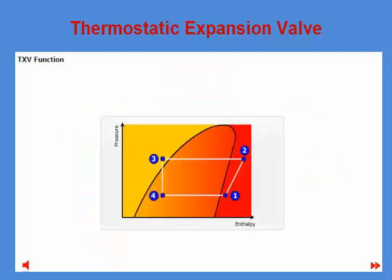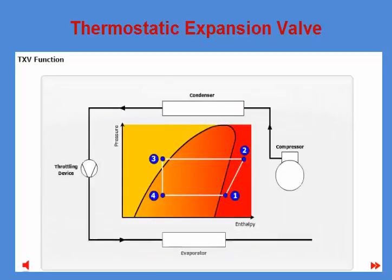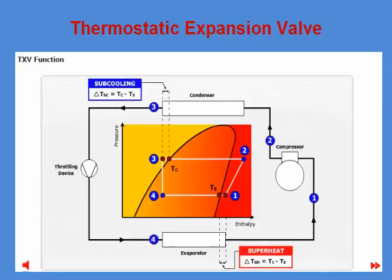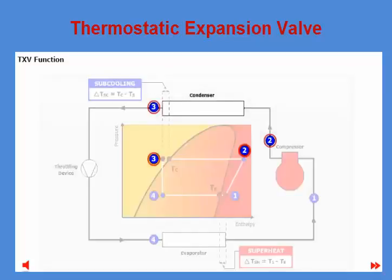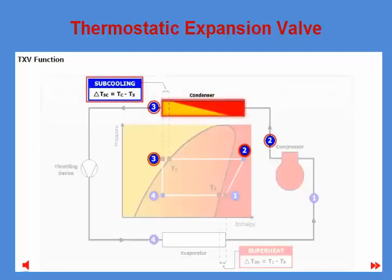This is a schematic of a refrigeration system showing what happens with the refrigerant in the four main system components. Between points one and two, the pressure of the refrigerant vapor is increased by the compressor; refrigerant leaves the compressor as hot vapor at high pressure. Between points two and three, the refrigerant is cooled down in the condenser, condensing from vapor to liquid. Refrigerant leaves the condenser as a sub-cooled liquid; pressure is not changed in the condenser.